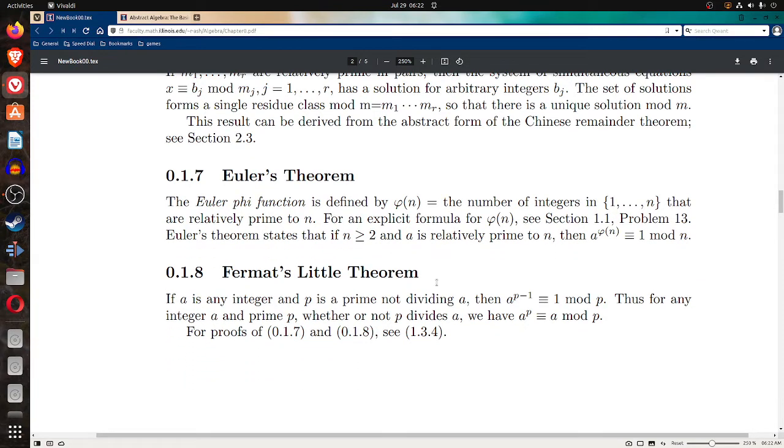Euler's Theorem is 0.1.7. The Euler phi function is defined by phi of n equals the number of integers in the set 1 through n that are relatively prime to n. For an explicit formula for phi of n, see section 1.1, problem 13.